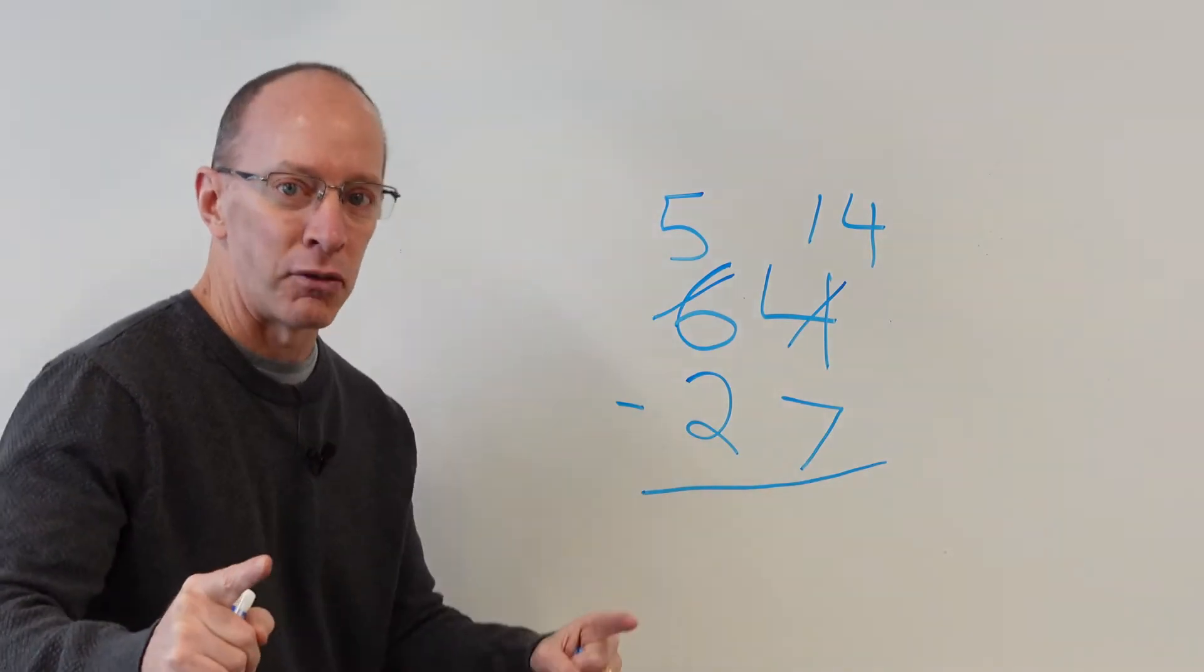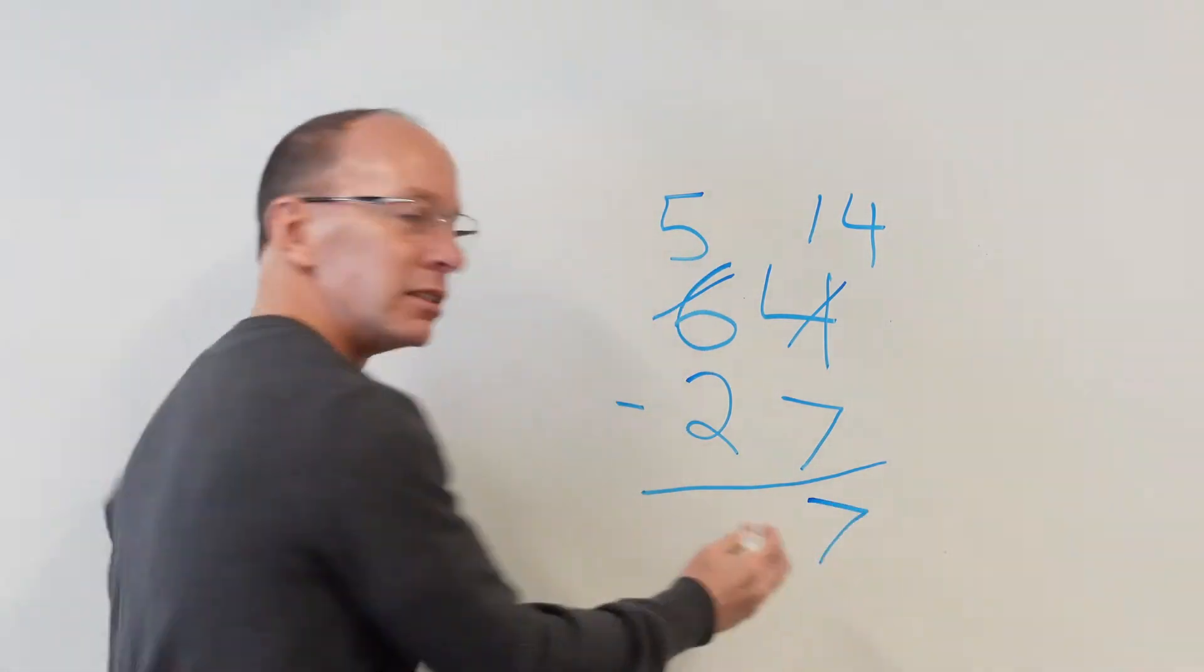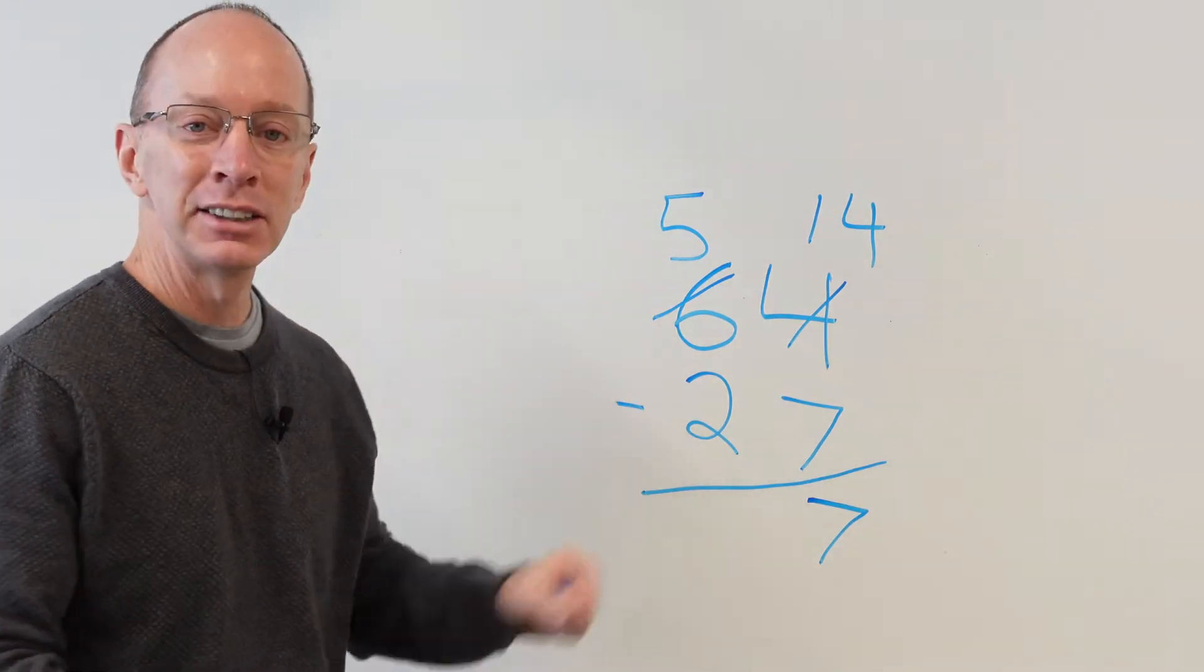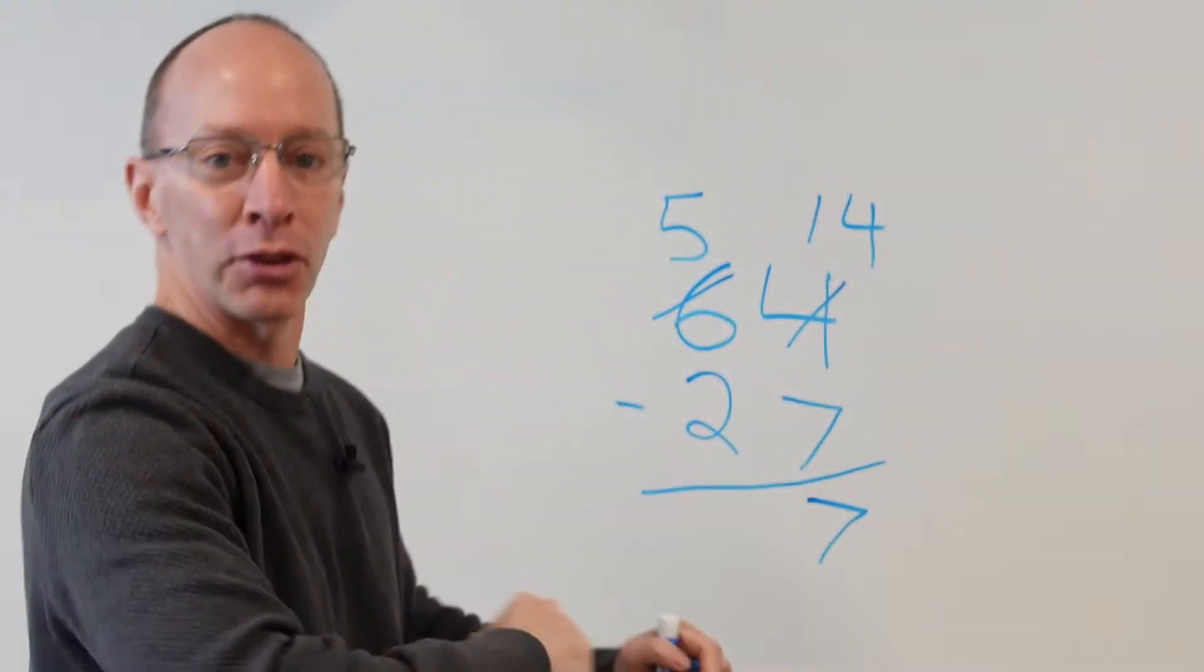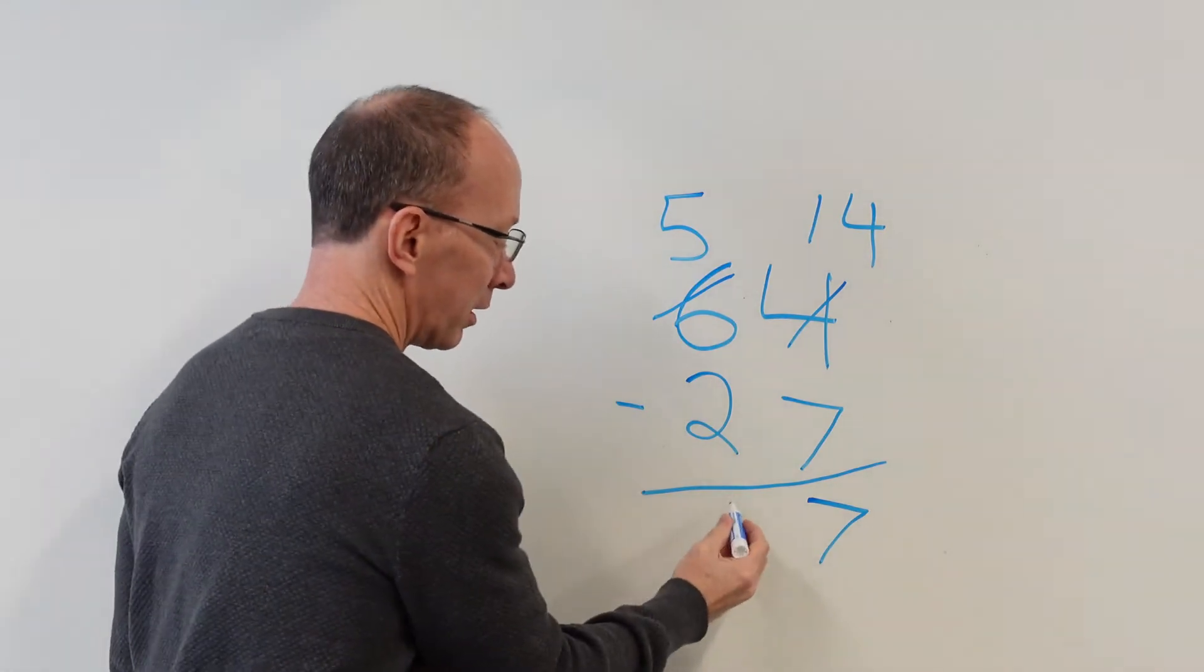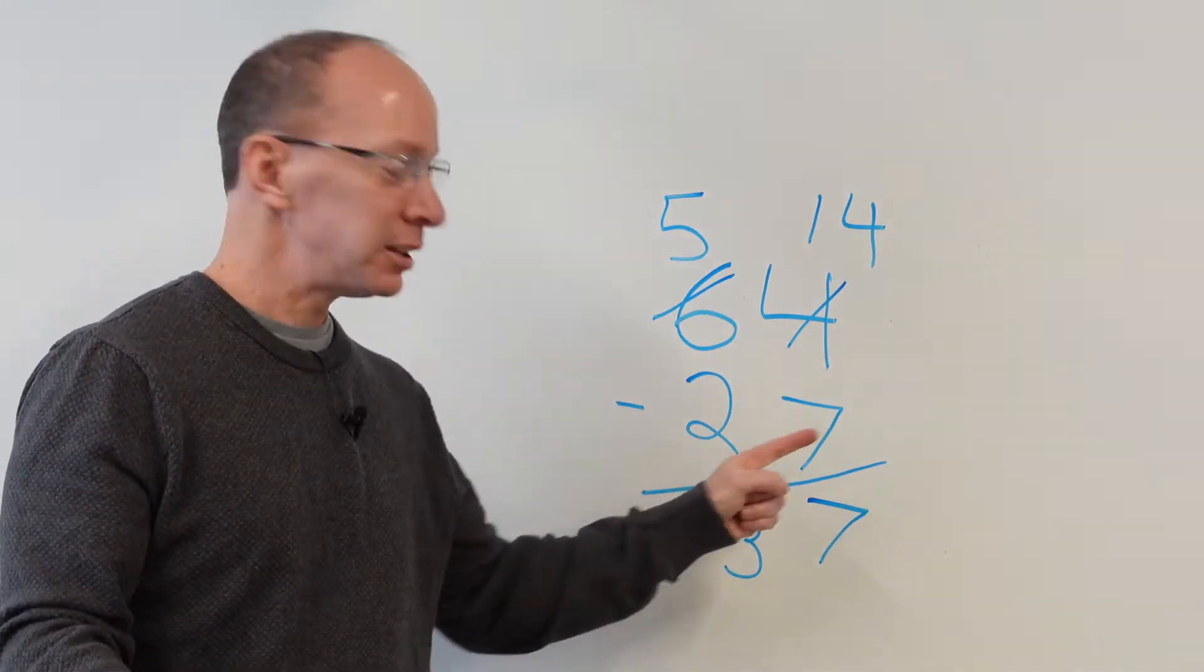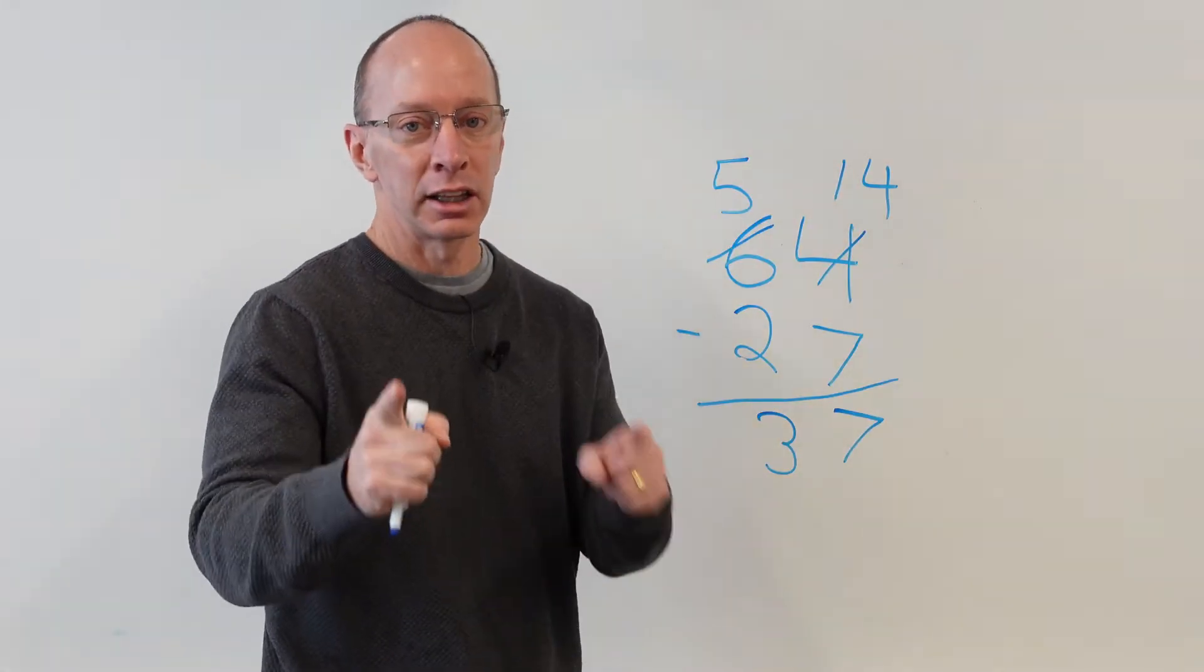14 minus seven. What is it? Double fact. Yeah. 14 minus seven is seven. Seven sent from heaven. There we got five minus two. Five. Take away two. What do you got? Bam. Three. Yeah. Five minus two. Three. You did it. 64 minus 27 equals 37. You guys ready to do the next problem? Yeah. Let's do it. Yeah. Right here.